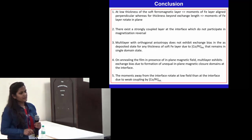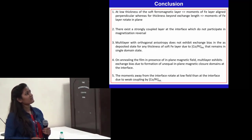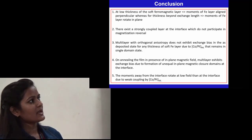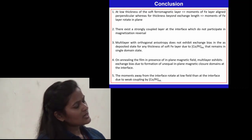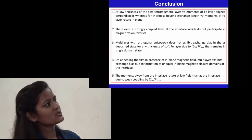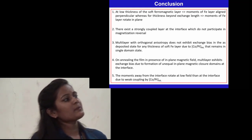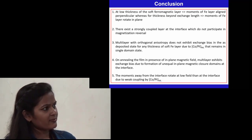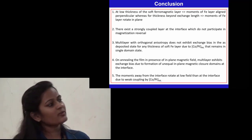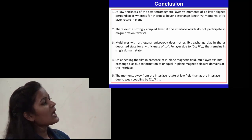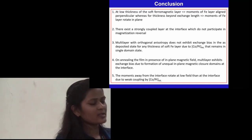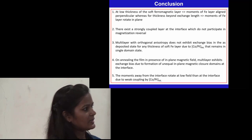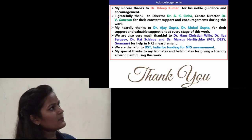In conclusion: at low thickness of the soft ferromagnetic layer, Fe moments are aligned perpendicular, whereas beyond a certain thickness they rotate in-plane. There exists a strongly coupled layer at the interface that does not participate in magnetization reversal. The multilayer with orthogonal anisotropies does not exhibit exchange bias in the as-deposited state at any Fe thickness, because the CoPt multilayer remains in a single domain state. When the film is annealed in the presence of an in-plane magnetic field, the multilayer exhibits exchange bias due to the formation of unequal magnetic closure domains at the interface. Moments away from the interface rotate at low field, while those at the interface remain pinned by the CoPt multilayer.